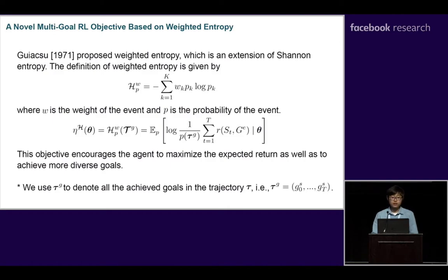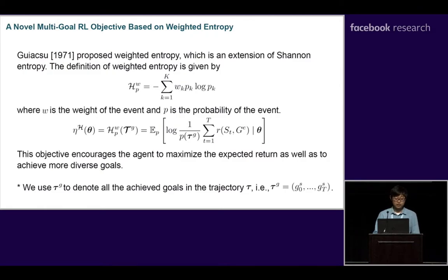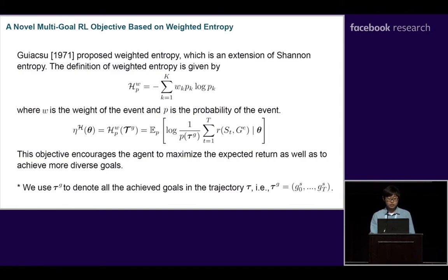The weighted entropy was proposed in 1971 as an extension of Shannon entropy. The definition of weighted entropy is shown here, where omega is the weight of the event and p is the probability of the event. We substitute the weight with the reward and propose the reward-weighted entropy. This objective encourages the agent to maximize the expected return as well as to achieve more diverse goals. In this equation, we use tau_g to represent all the achieved goals in the trajectory.